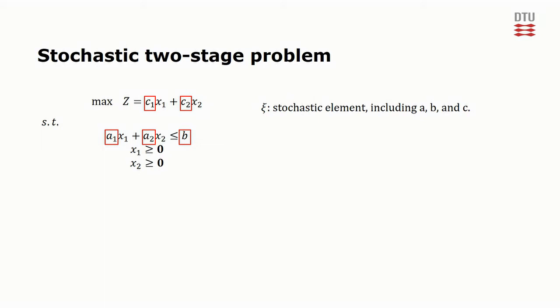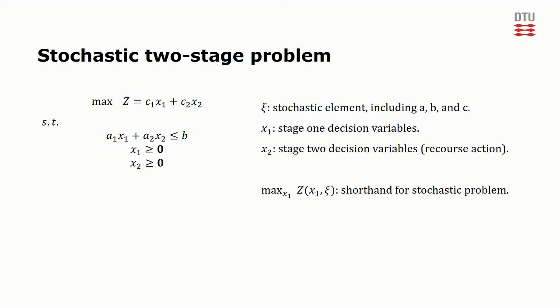And other, the stage 2 variables, or recourse action, can be changed after the true value of the parameters are known. We use the vector x1 when referring to the first-stage decision variables and the vector x2 for the second-stage variables. Furthermore, max c and psi is used as a shorthand for the stochastic program shown to the left.